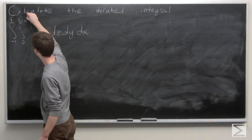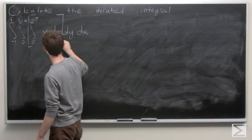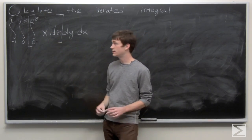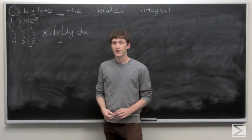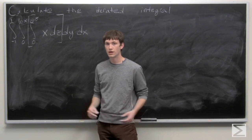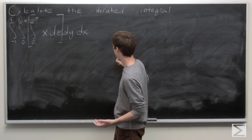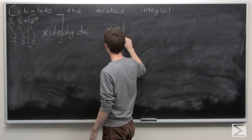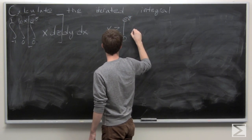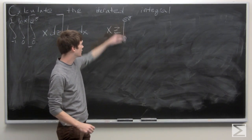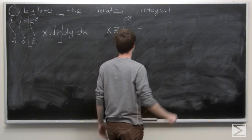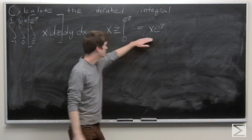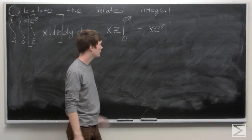First, we can split this up into three integrals, the first of which is the integral from 0 to e to the y of x dz. The integral of x with respect to z treats x as a constant, so we get x times z. Evaluating from 0 to e to the y gives x·e to the y minus 0, so just x·e to the y.